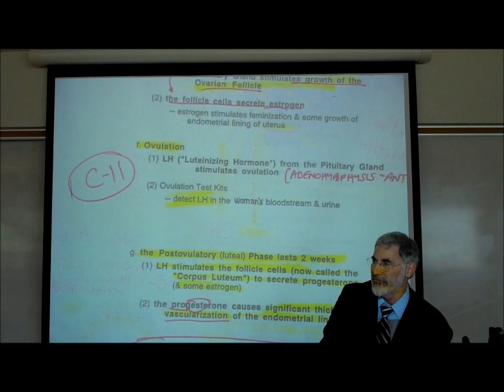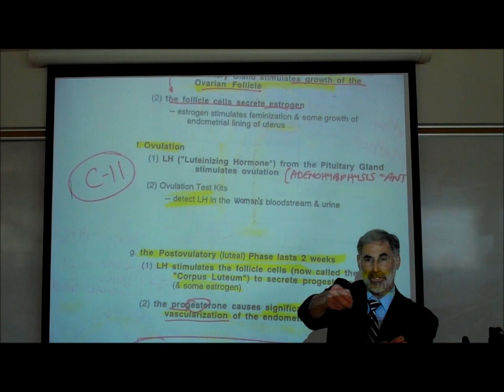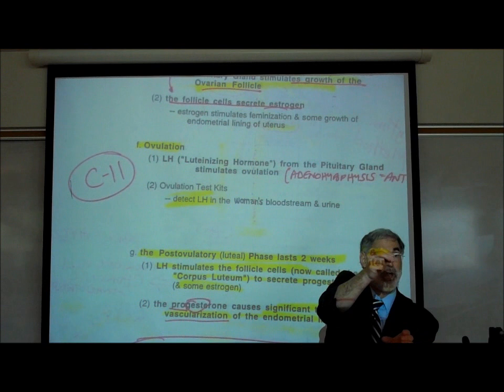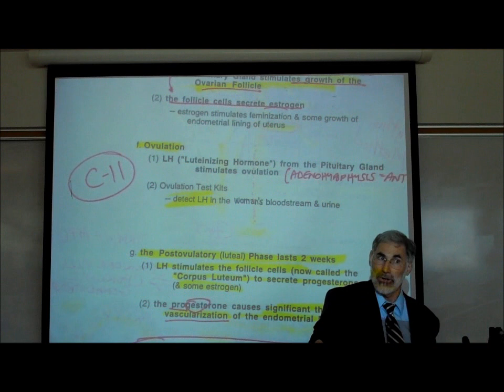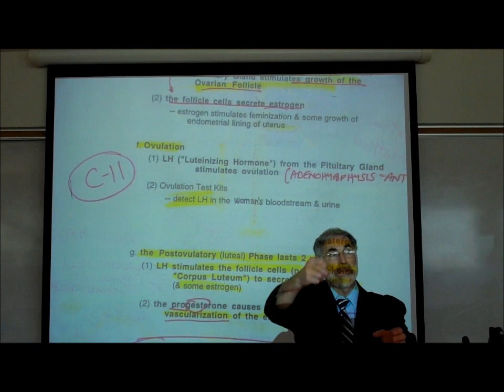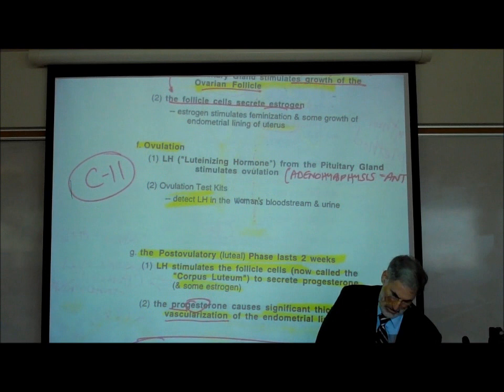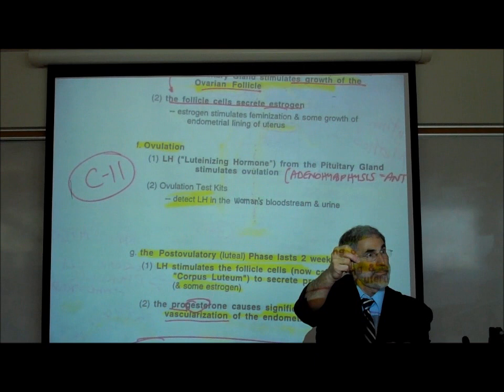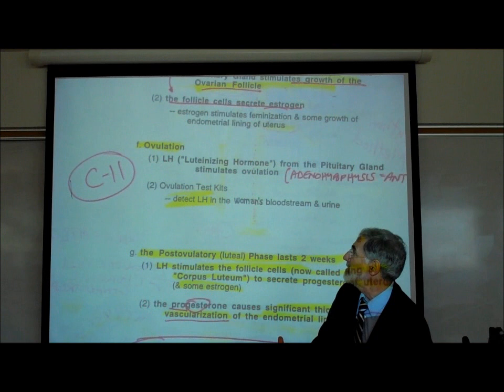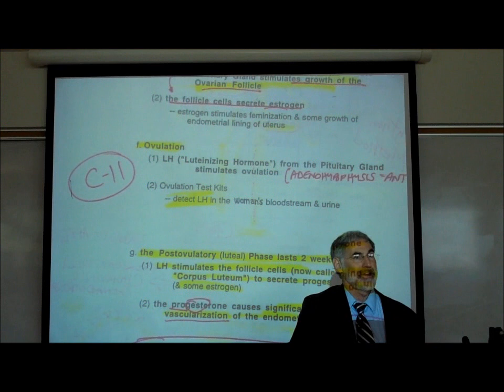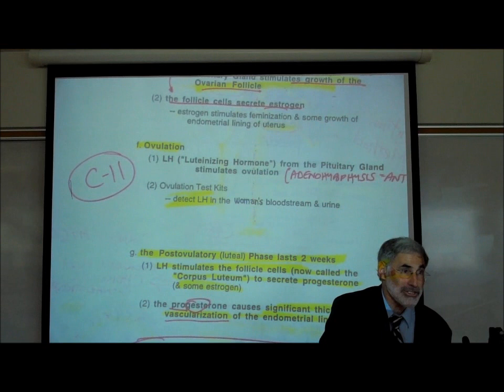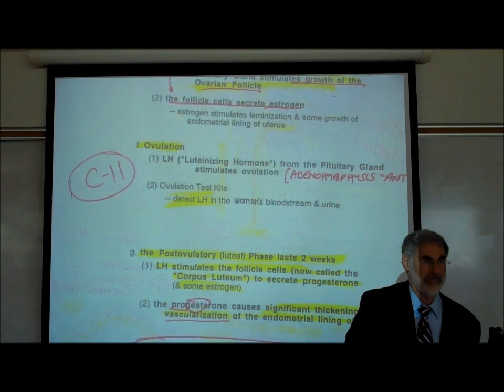Once the test strip changes color, she knows she is around the time of ovulation. A woman may want to know when she ovulates for two reasons: either she wants to get pregnant, or she doesn't. The more common use is for a woman trying to get pregnant. She cannot get pregnant when the egg is still in the ovary. Once the egg pops into the fallopian tube, that's when she can get pregnant — and it will travel down the tube for about a week.